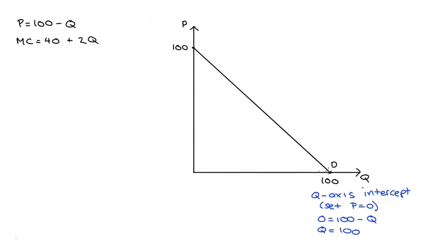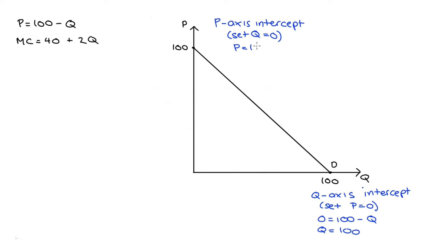To find the price axis intercept, I set quantity equal to 0 and get price equals 100 minus 0, so price equals 100.